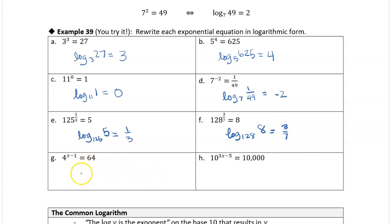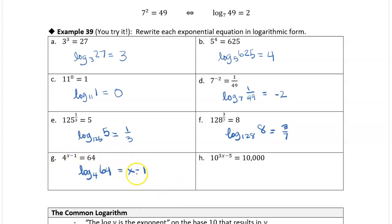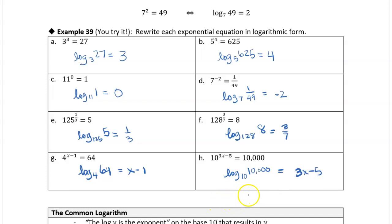4 to the power x minus 1 equals 64: the base is 4, so log base 4 of 64 equals x minus 1. Next: 10 to the 3x minus 5 equals 10,000, so log base 10 of 10,000 equals 3x minus 5.